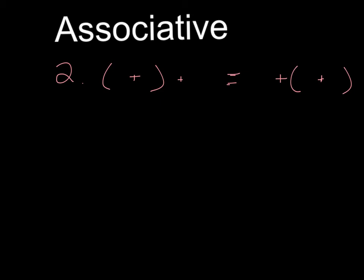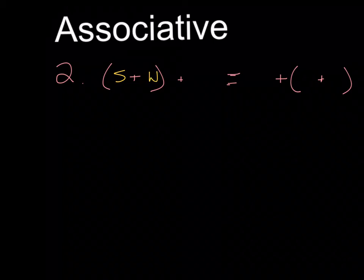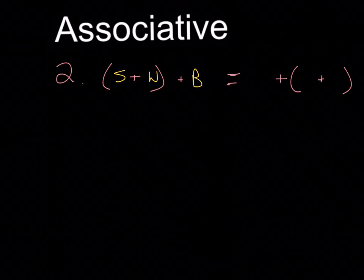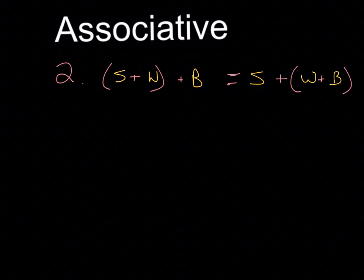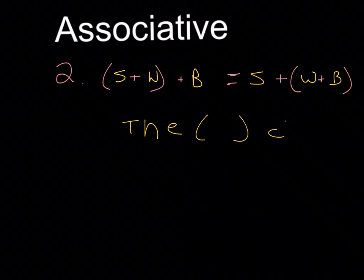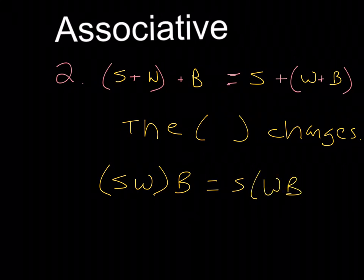Remember, the associative property is when the grouping is different. For example, if I go to school and then Walmart, I then go to Burger King. Or I could do it another way — go to school first, then go to Walmart and Burger King together. That's where the grouping is different — just remember that the parentheses change. Same thing with multiplication: I could do S times W — school and Walmart — to Burger King, or go to school first, then Walmart and Burger King. That's the associative property.